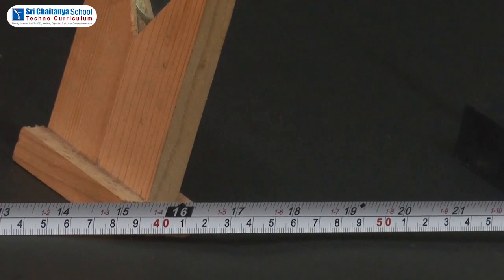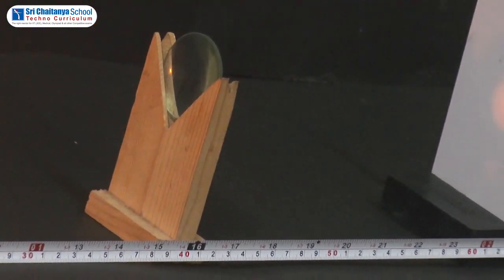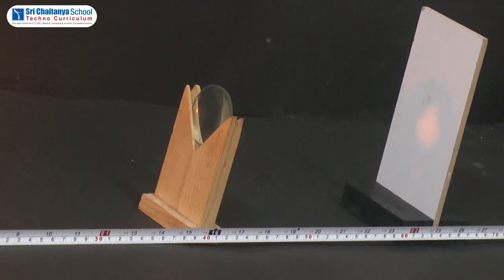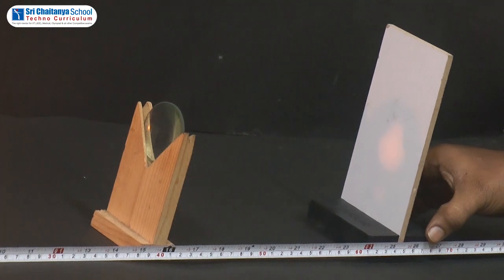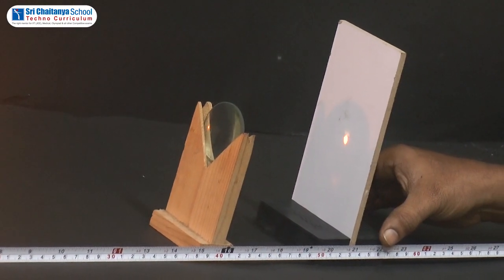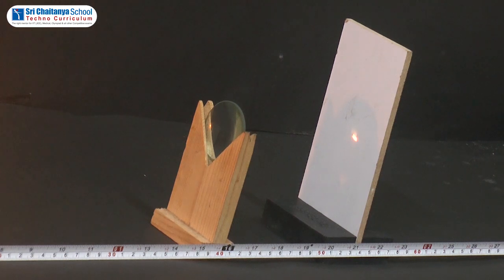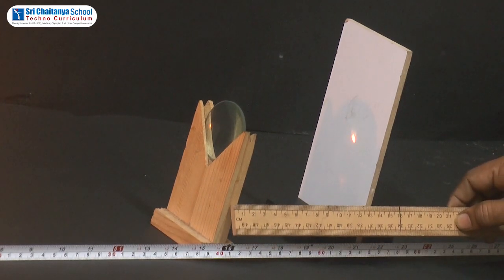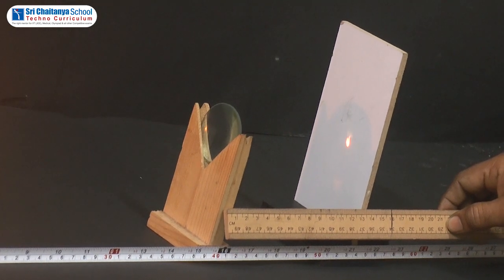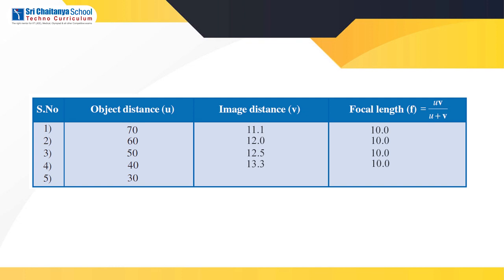Place the convex lens at 40 cm mark — that means object distance is 40 cm. We will adjust the screen to get the sharp image of the candle flame. We got the sharp image and in this case too the image is an inverted image. Now we will find the image distance — here it is about 13.3 cm. Tabulating the values: object distance 40 cm, image distance 13.3 cm, and the focal length is 10 cm.